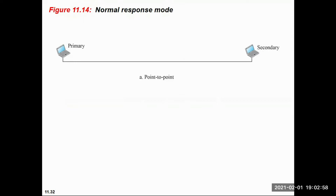In the figure, you can see primary and secondary stations. The primary station has the responsibility of data link management — basically activating, maintaining, and disconnecting the data link. The secondary station operates under the control of a primary station. The primary station sends commands, known as frames, to the secondary stations under it.